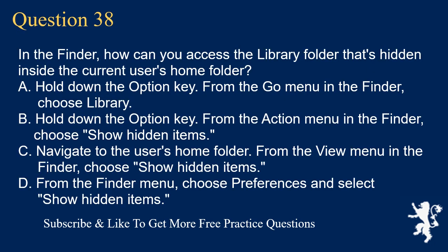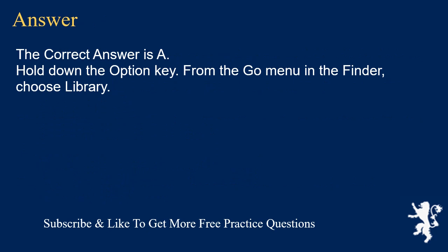Question 38. In the Finder, how can you access the Library folder that's hidden inside the current user's home folder? A. Hold down the Option key; from the Go menu in the Finder, choose Library. B. Hold down the Option key; from the Action menu in the Finder, choose Show Hidden Items. C. Navigate to the user's home folder; from the View menu in the Finder, choose Show Hidden Items. D. From the Finder menu, choose Preferences and select Show Hidden Items. The correct answer is A: Hold down the Option key; from the Go menu in the Finder, choose Library.